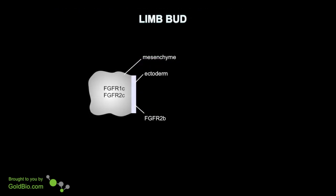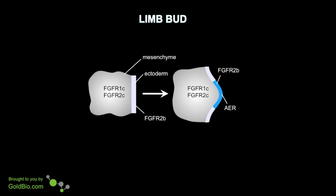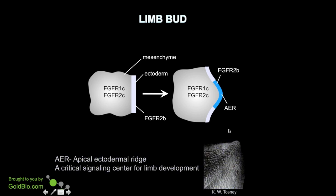An example of expression of different splice forms of the FGF receptor can be seen in the limb bud, where FGF receptors 1C and 2C are expressed in limb mesenchyme, and FGF receptor 2B is expressed in limb epithelium. As the limb develops, this expression pattern is maintained with mesenchymal splice forms of receptors expressed in limb mesenchyme, and the epithelial splice form FGF receptor 2B expressed in the developing apical ectodermal ridge. This apical ectodermal ridge is a critical signaling center for limb development.